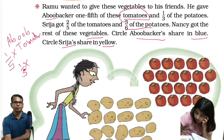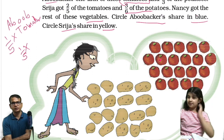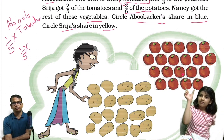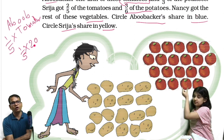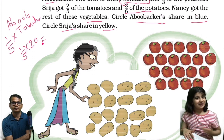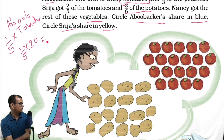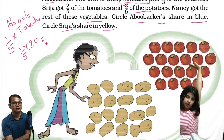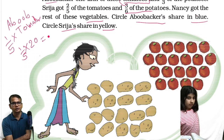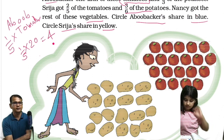Counting the tomatoes: total is twenty tomatoes. One fifth of twenty — so twenty divided by five equals four. Five fours are twenty, so Abu Bakar gets four tomatoes. And three sixths of the potatoes: counting the potatoes gives eighteen total. Eighteen by six equals three, and three multiplied by three is nine. So Abu Bakar gets nine potatoes.